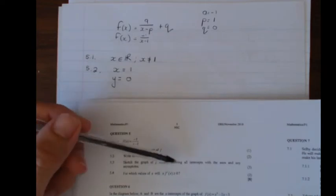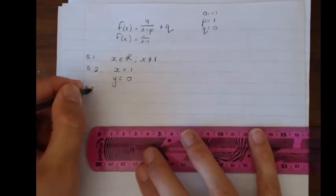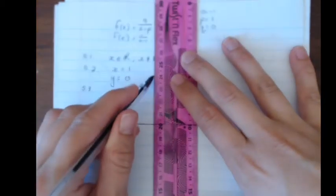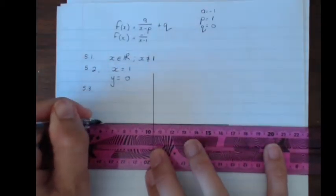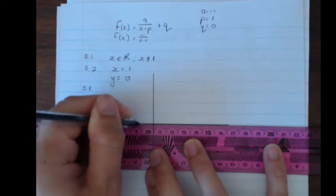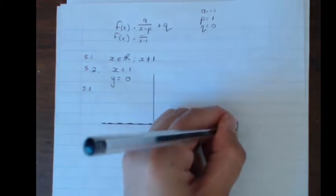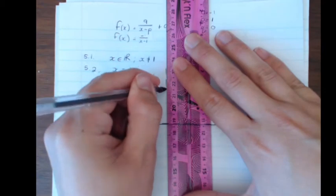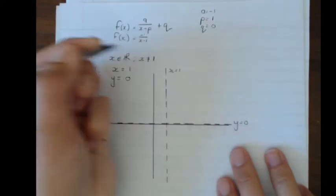Sketch the graph of f, clearly showing all the intercepts with the axis and any asymptotes. So sketch the graph 5.3. I'm just quickly going to get this set of axis here. My horizontal asymptote is at y is equal to 0, which is on the x-axis. So y is equal to 0, and x is equal to 1 is an asymptote. x is equal to 1.